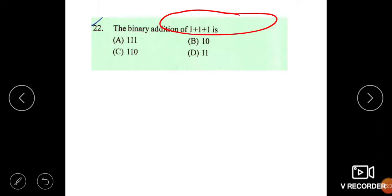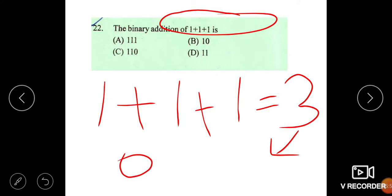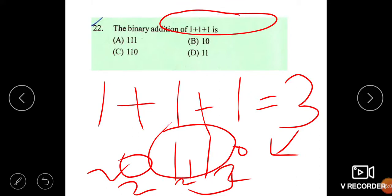Next question. Add this number. If we add 1, 1, 1, we get value 3. Then convert this 3 into binary. We get 0, 1, 1. Here you can see 2 to the power 0, 2 to the power 1, and 2 to the power 2. If we add these two numbers, we get 3. For this reason, we get 1, 1. Option D is the correct answer.